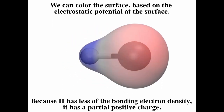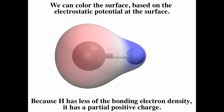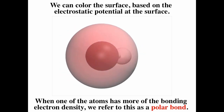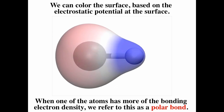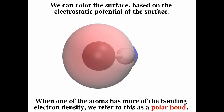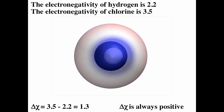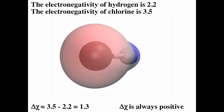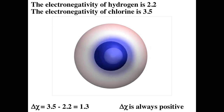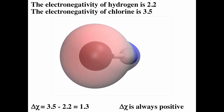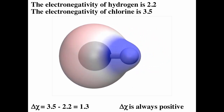This is a fairly accurate representation of the HCl molecule. When one of the atoms has more of the bonding electron density, we refer to this as a polar bond. The electronegativity of hydrogen is 2.2, the electronegativity of chlorine is 3.5, and so the difference is 1.3. Since the difference in electronegativity is between 0.5 and 2, that leads to a polar covalent bond — the more electronegative atom holds more of the bonding electron density and typically ends up with a partial negative charge.